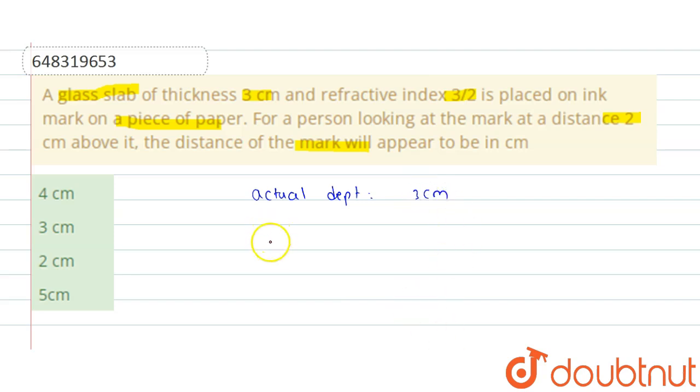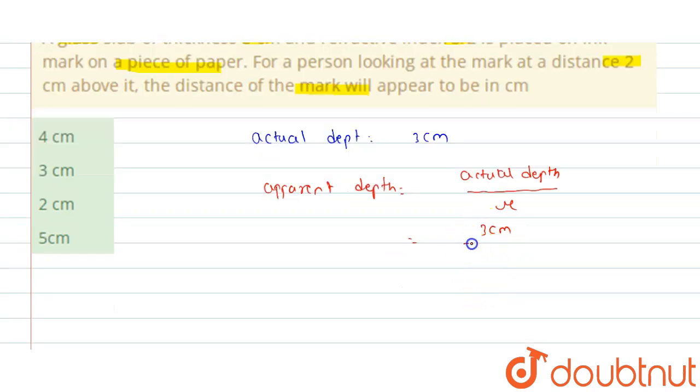And we know students, apparent depth is equal to actual depth divided by the refractive index of the glass mu. So we have the actual depth is 3 cm divided by the refractive index of glass 3 by 2. So 3 and 3 get cancelled out and we get the apparent depth is 2 cm.